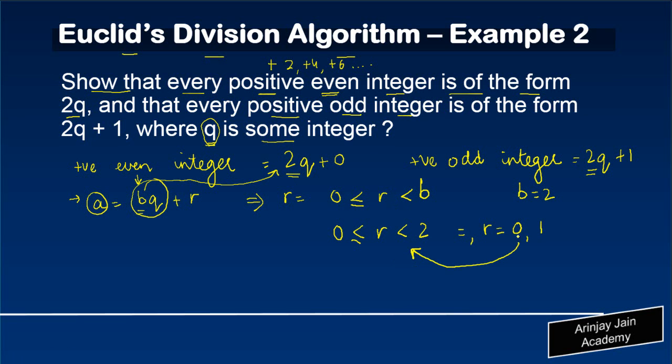Now, if r = 0 or 1, then what do we have in this particular formula? We have a = 2q + 0, or we have a = 2q + 1, because we substitute the value of r over here. Or in other words, a could have a value which is 2q or 2q + 1.